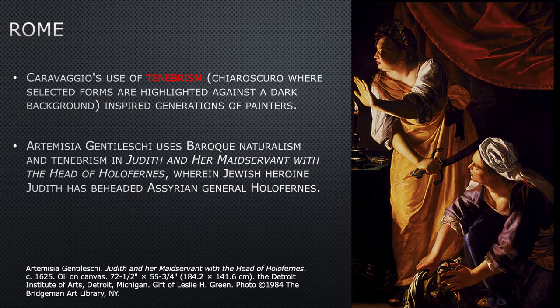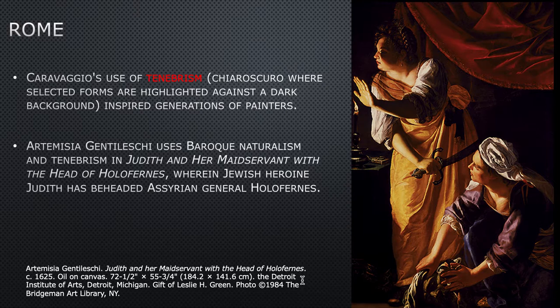You've got this tenebrism here — everything Caravaggio was doing, Artemisia does. She crops in tightly: we don't know it's supposed to be a tent; all we see is these two women and the severed head of the general Holofernes. She uses that dramatic tenebristic light, and in this case she even shows us the light source — a single candle in the frame — very dramatically and very naturalistically painted.